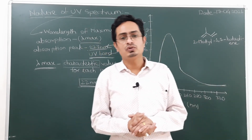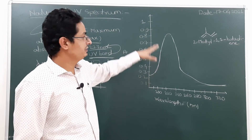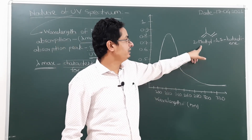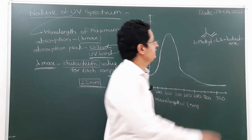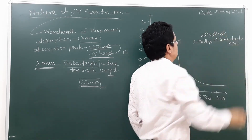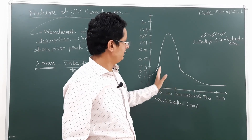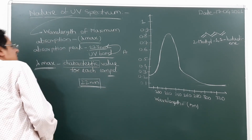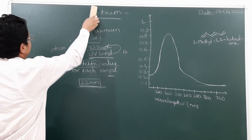This is about the nature of UV spectrum. For every different compound, its UV spectrum will differ. As conjugation increases — as the number of double bonds increases — the absorbance shifts to a longer wavelength. That is, the lambda max value increases with more conjugation. This is about the nature of UV spectrum.